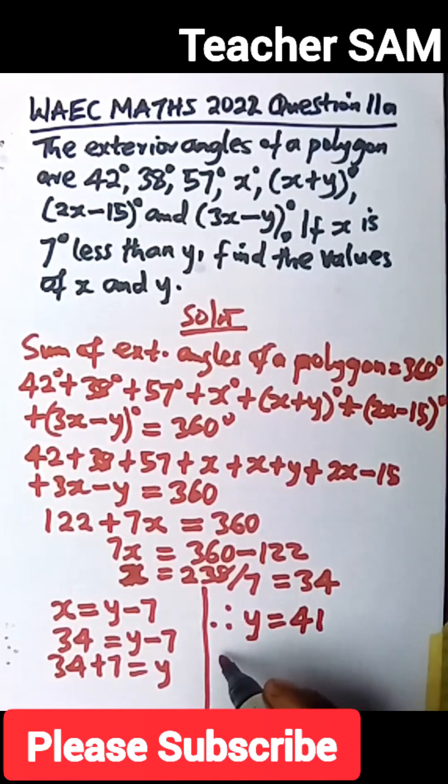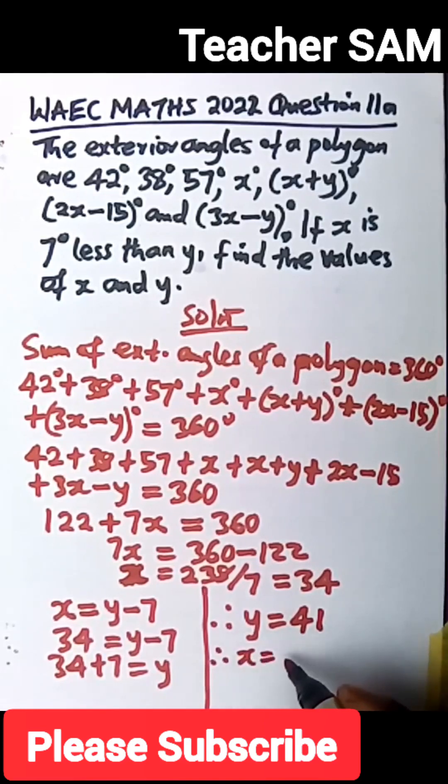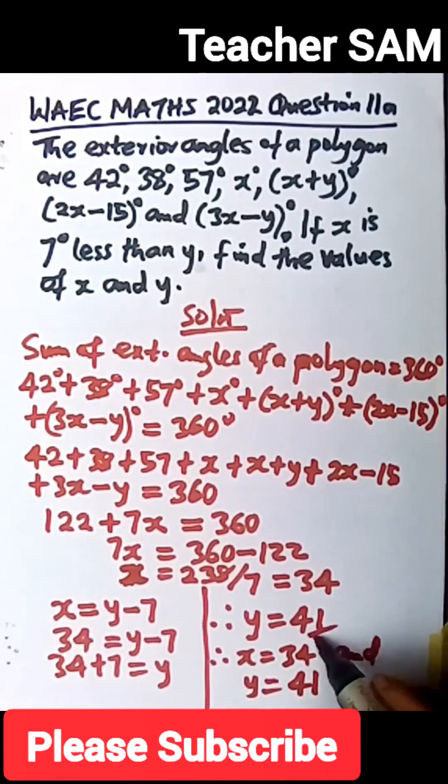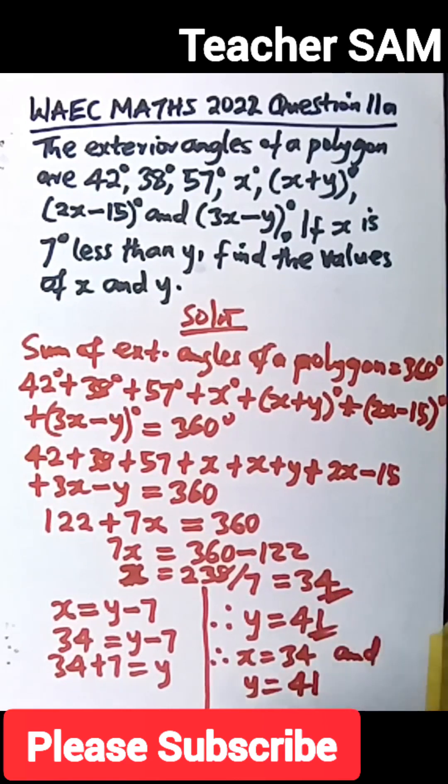We can now state categorically that at the end of the day, we can say again, therefore, our x is equals to 34 and our y is equals to 41. So these are the values of x and the values of y.